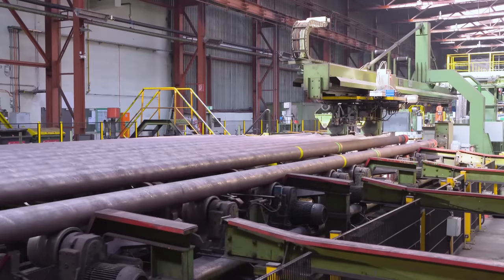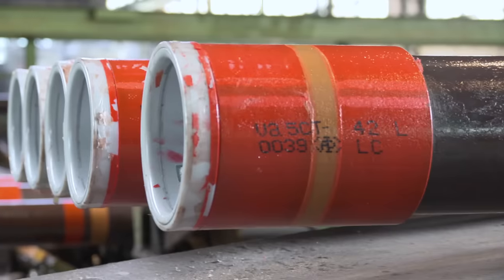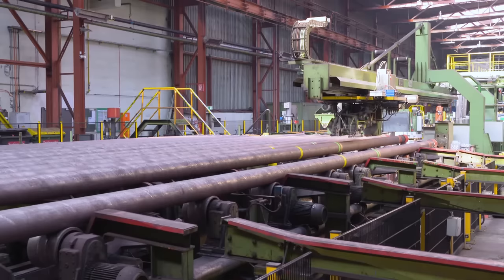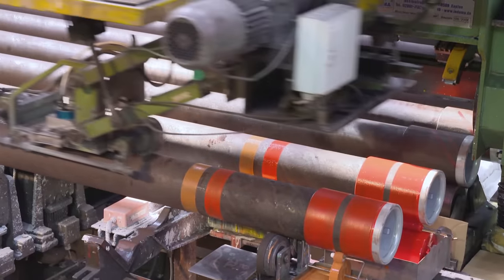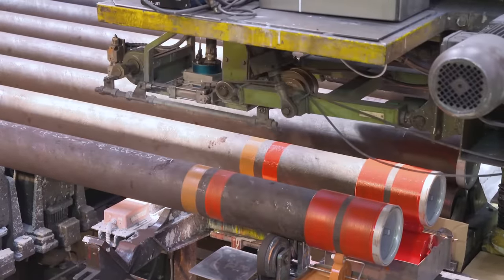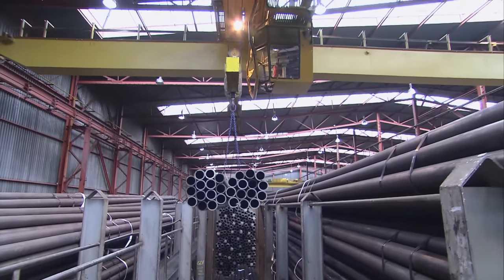In the last step of the production process, the tubes are weighed and measured. If required, both the tubes and couplings are stamped with unique identifications. Production and order-related data is stenciled along the body of the pipe. Finally, the tubes are strapped together in bundles and prepared for shipping.